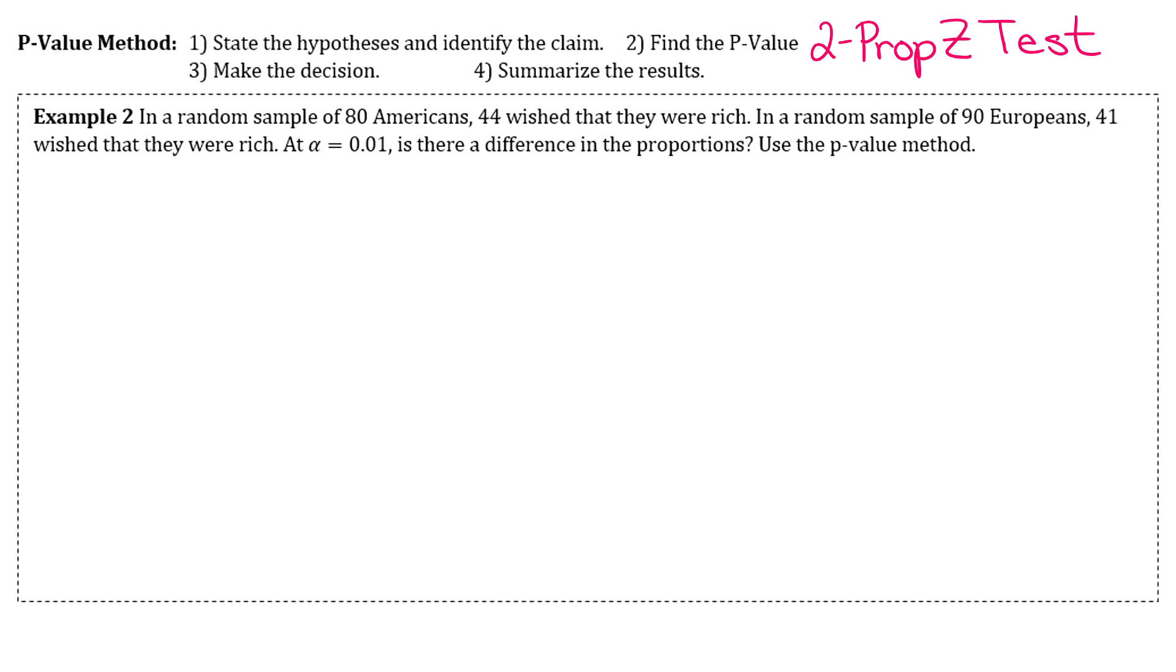Example 2 says in a random sample of 80 Americans, 44 wished that they were rich. In a random sample of 90 Europeans, 41 said the same thing. Alpha is 0.01. Is there a difference in the proportions?